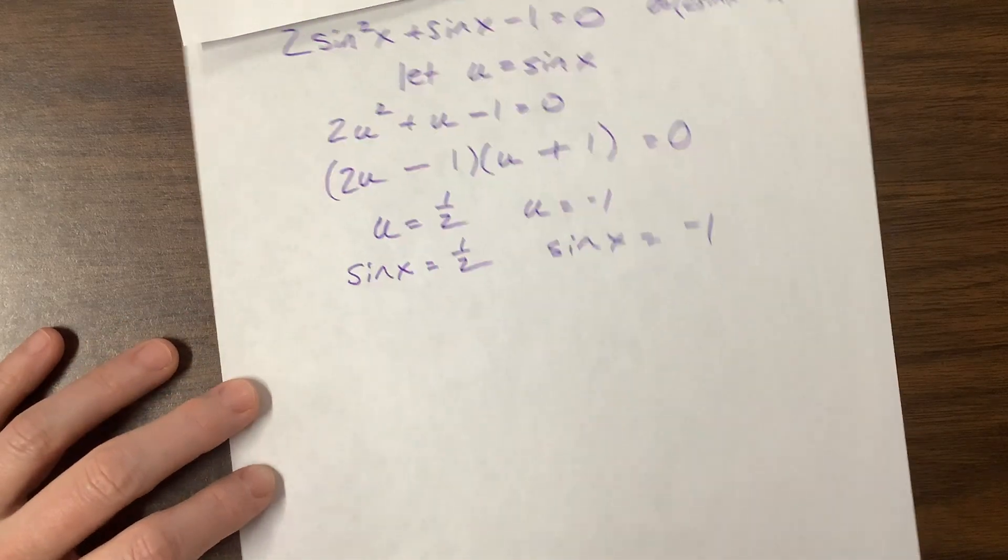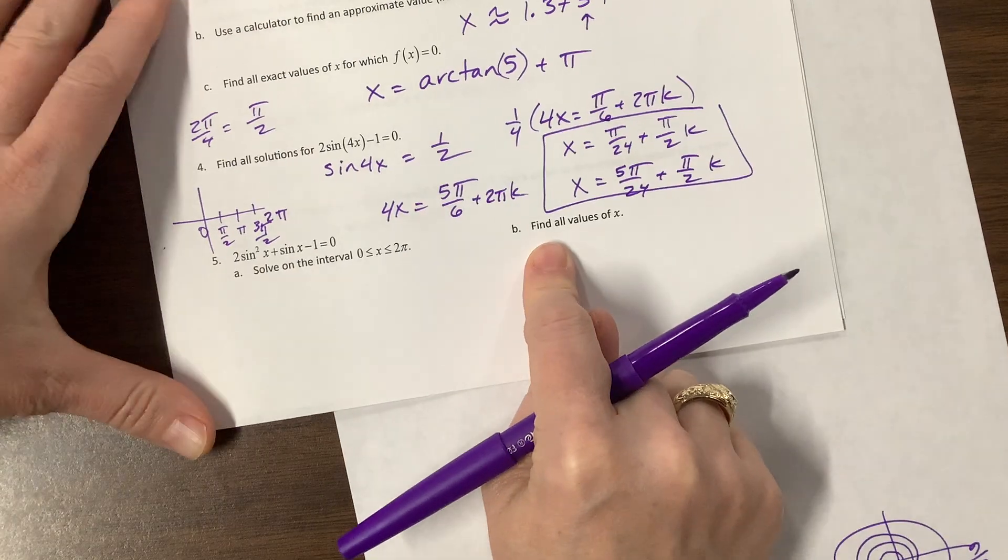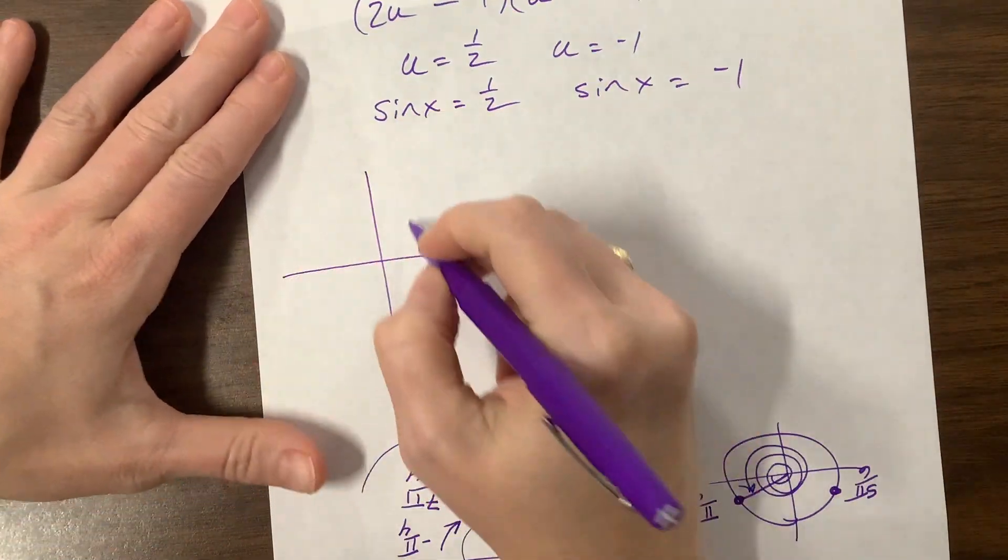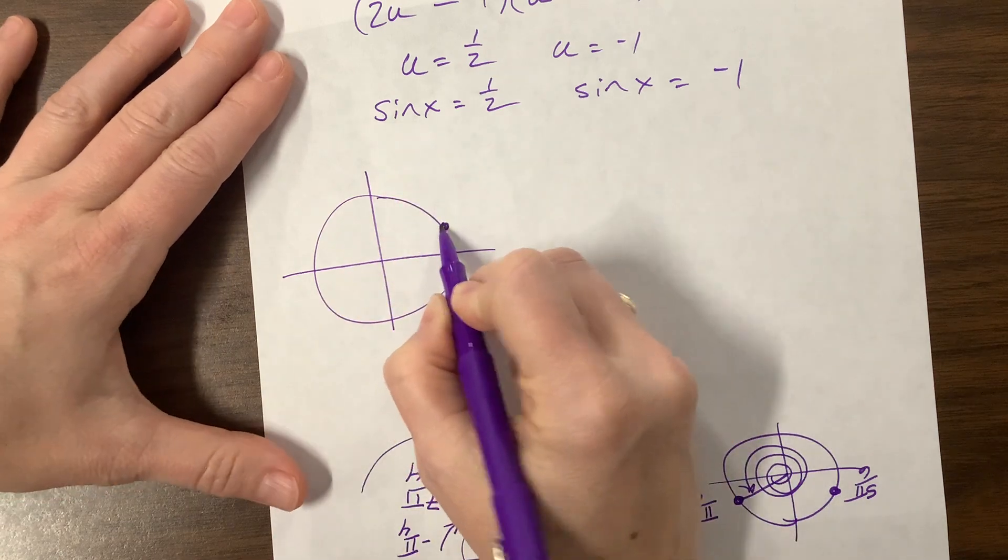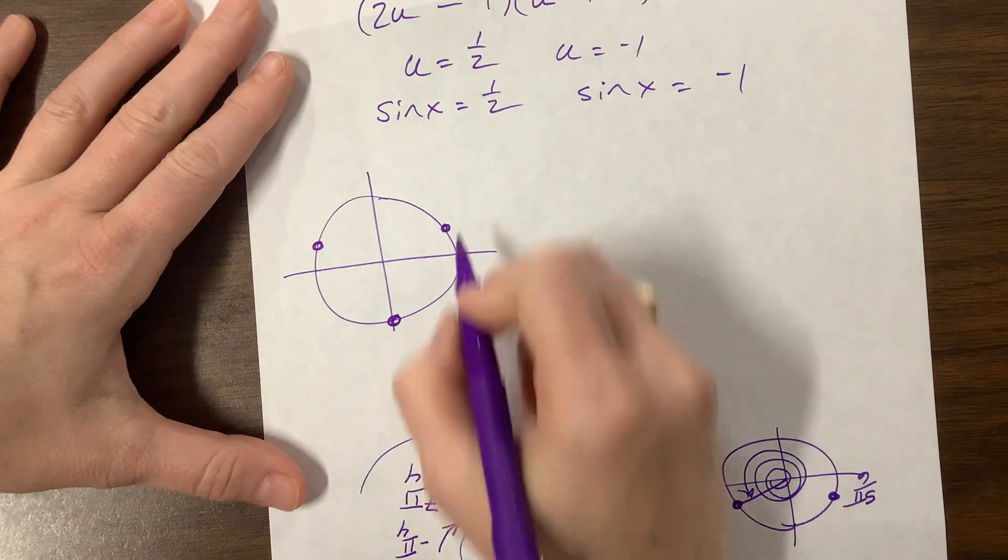So what did the directions say? They said solve on the interval and find all values. What I'm looking at here on my unit circle, when is sine 1/2? Here and here. When is sine negative 1? Here. So this is π/6.